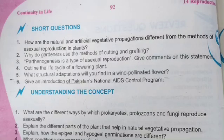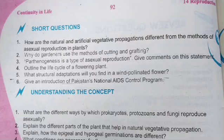Moving to understanding the concepts — first question: what are the different ways by which prokaryotes, protozoans and fungi reproduce asexually? There are different methods of asexual reproduction. For prokaryotes and protozoans, methods include budding and other asexual reproduction strategies.